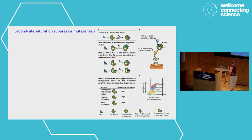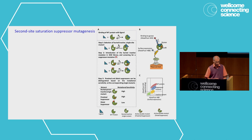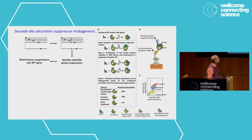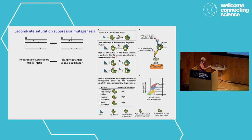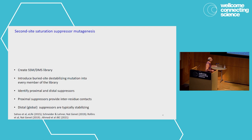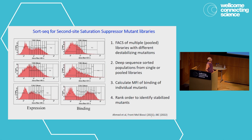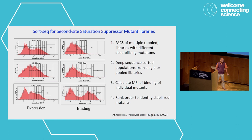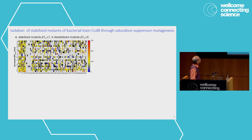With proximal suppressors you can get residue contact information, and distal suppressors offer a pathway for stabilizing the protein. You make a DMS library, introduce a destabilizing mutation, and then you have a very easy method for finding suppressors. The distal suppressors are typically stabilizing. In a yeast display system you can FACS-sort multiple suppressor libraries pooled together, calculate the mean fluorescence intensities of binding of individual mutants, and rank-order them to identify stabilized mutants.